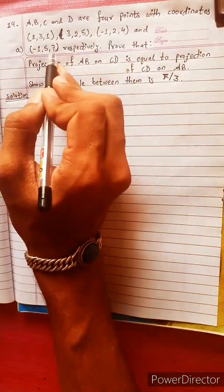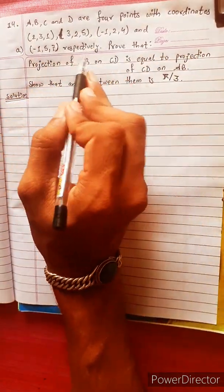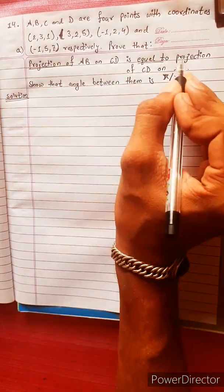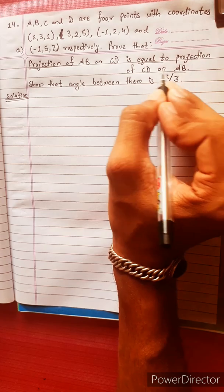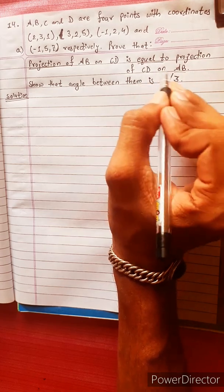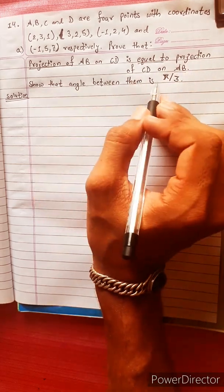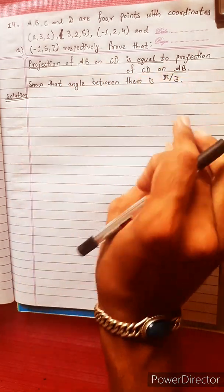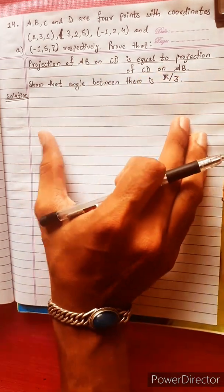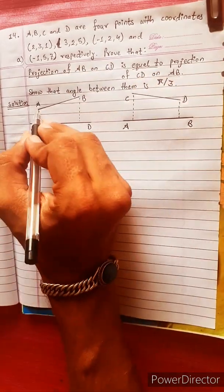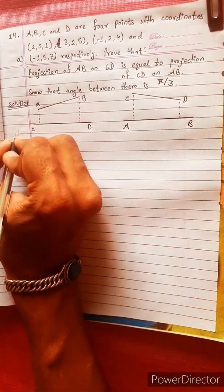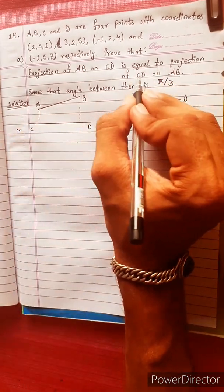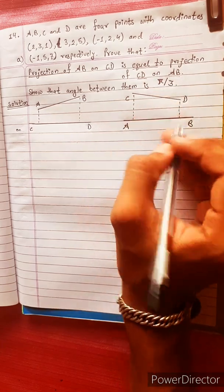We have points A, B, C, D. Prove that the projection of CD on AB is equal to the projection of AB on CD. The figure shows AB and CD, and we need to verify this using the angle between them.